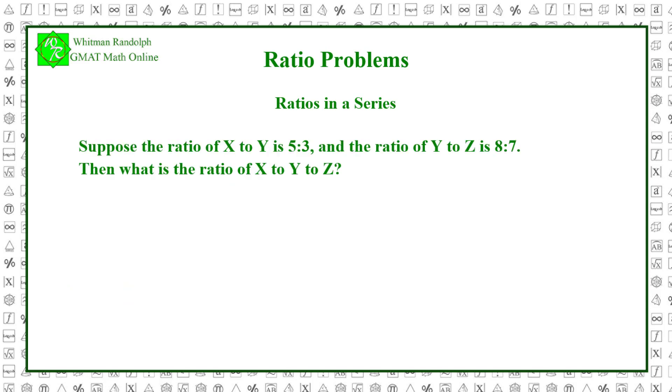Problem: Suppose the ratio of x to y is 5 to 3, and the ratio of y to z is 8 to 7. Then what is the ratio of x to y to z? Let's find the solution.